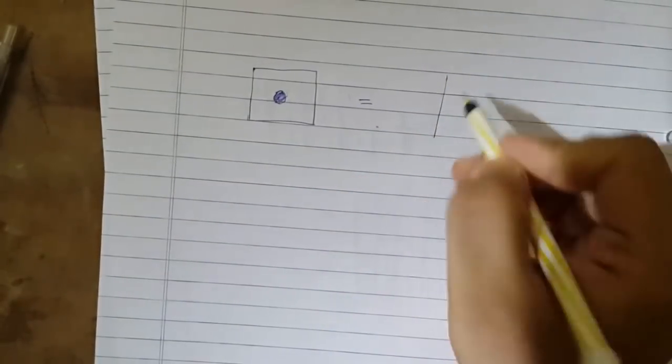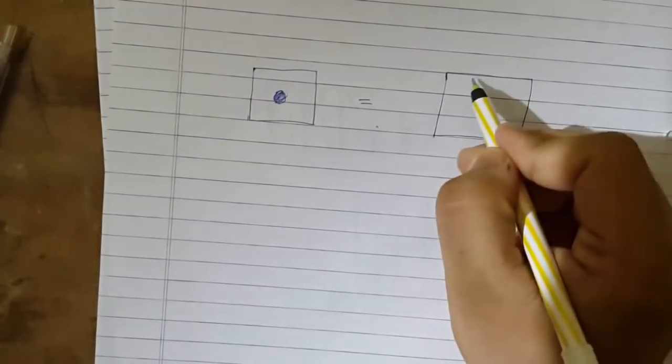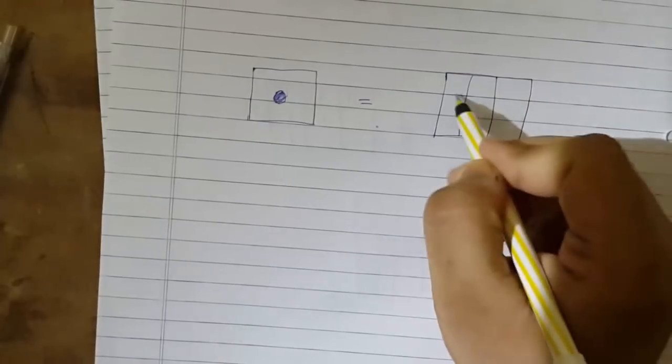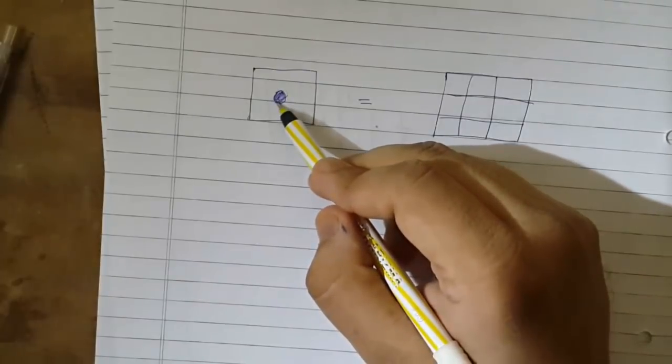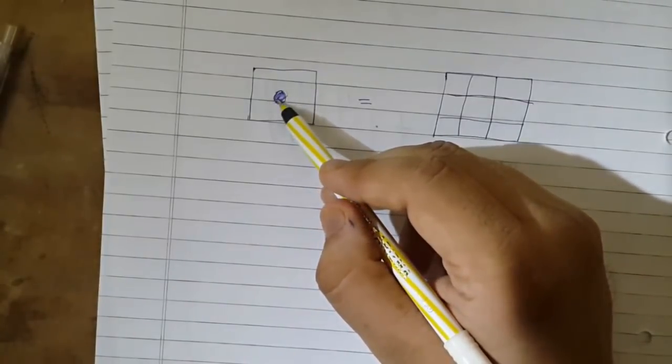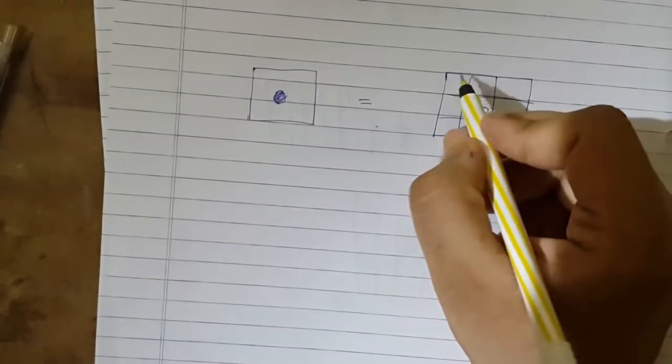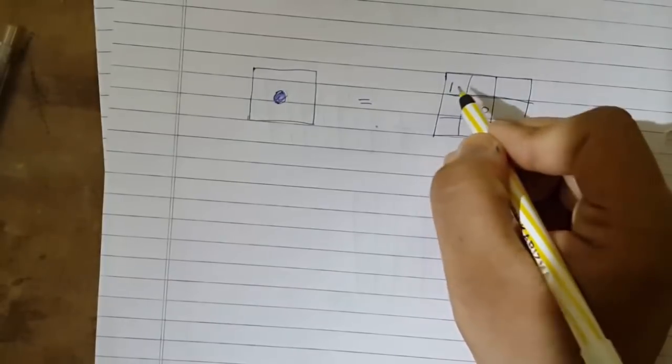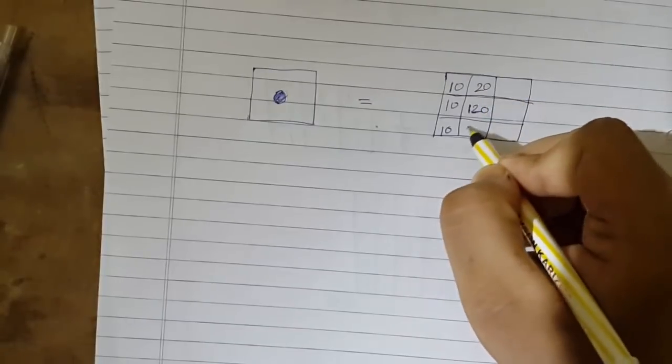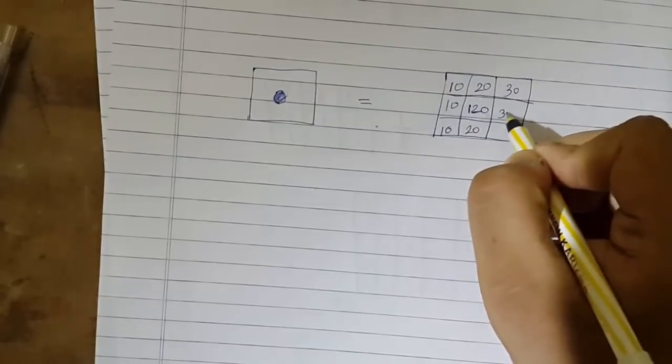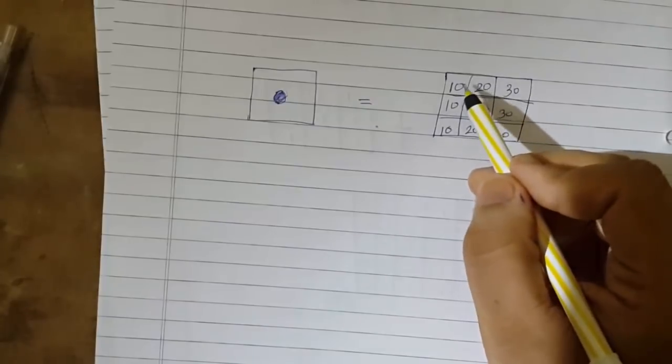Now I will just convert this image into more numerically understandable form, that is in its spatial representation. Now as this is the highest intensity spot over here, I will give it a greater value, say 120. Now I will represent this with 10, 10, 10. Say this is 20, 20, 30, 30, 30.